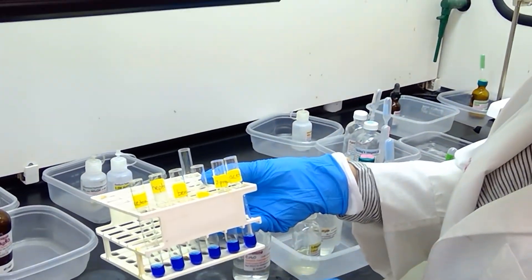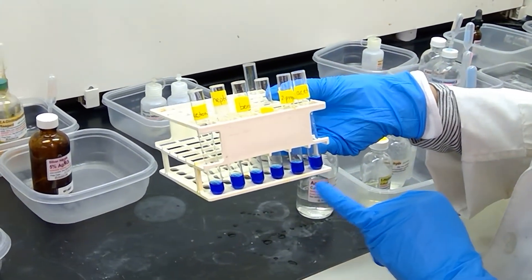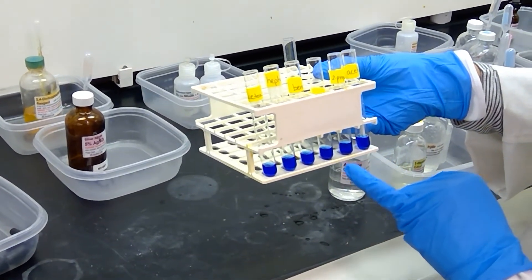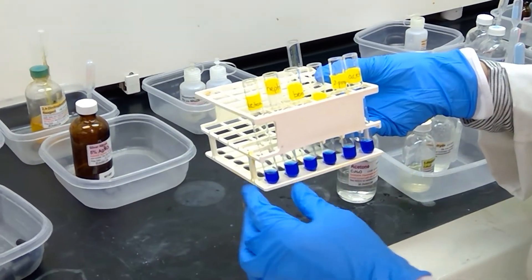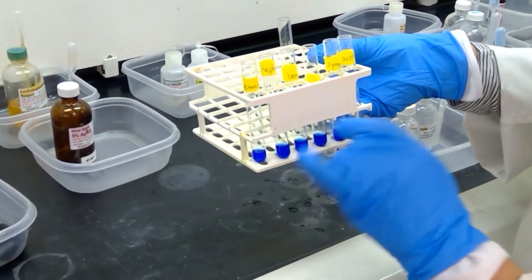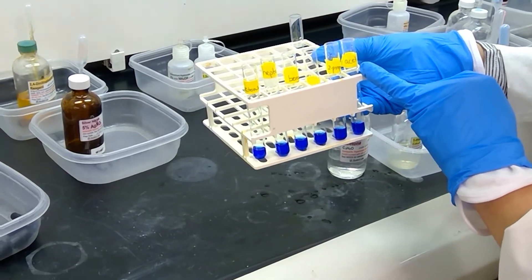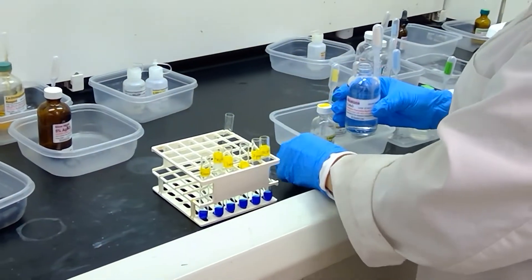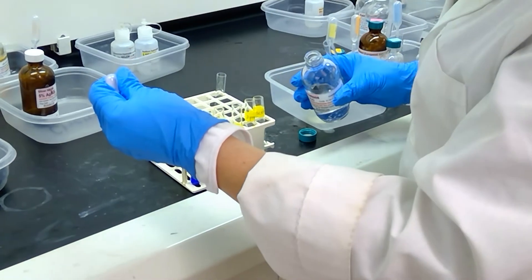So far in our test tubes we have Fehling solution A and B, and I mixed them together to create a homogeneous solution. We have this very nice dark blue solution in each of our test tubes. I'm now going to add two to three drops of sample to each one of the test tubes. We are testing the same six compounds that we had in the previous tests: acetone, heptanal, benzaldehyde, 3-pentanone, 2-propanol, and acetophenone. After we have added the appropriate amount of sample to each test tube, we're going to put these in a boiling water bath.